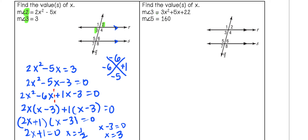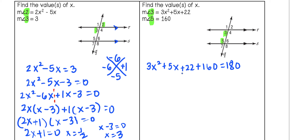For the next example, we have the measure of angle 3 and angle 5. Angles 3 and 5 are both on the same side of the transversal between parallel lines, making them consecutive interior angles. When lines are parallel, consecutive interior angles are supplementary. So we add the two expressions together and set them equal to 180. Combining like terms on the left gives a trinomial, and subtracting 180 from each side gives 3x squared plus 5x plus 2 equals 0.